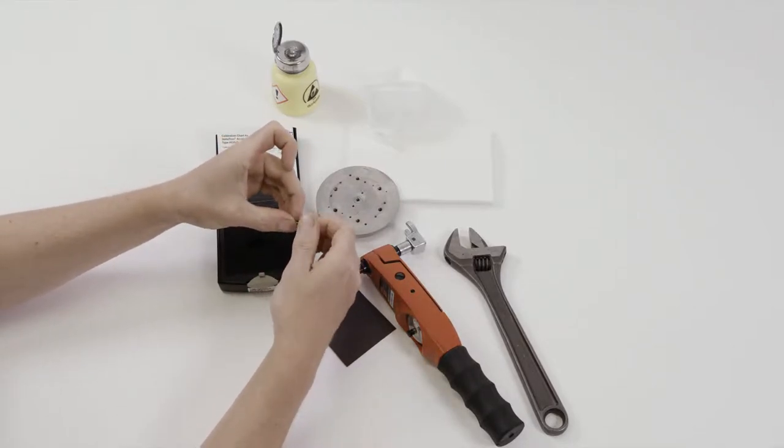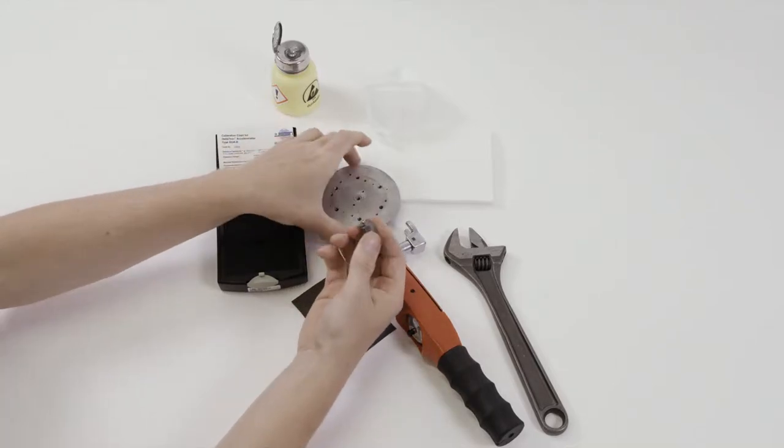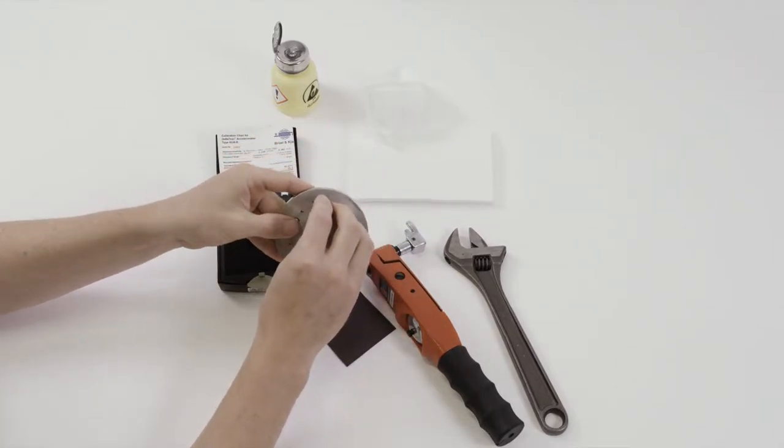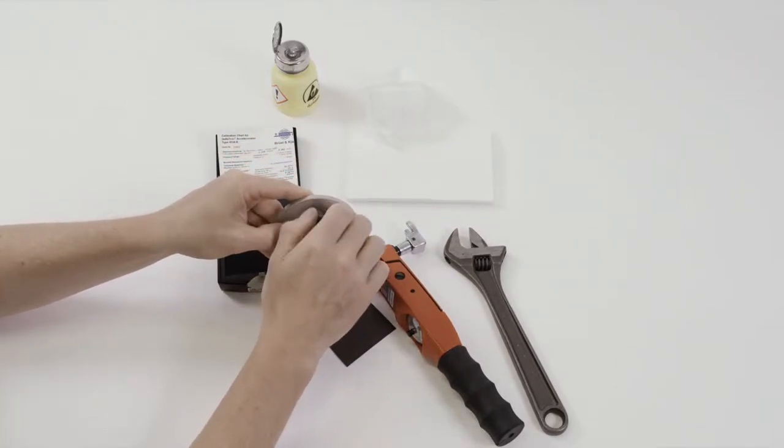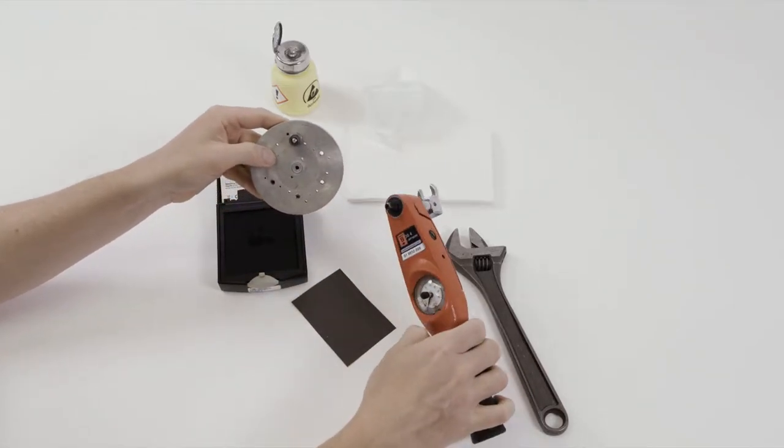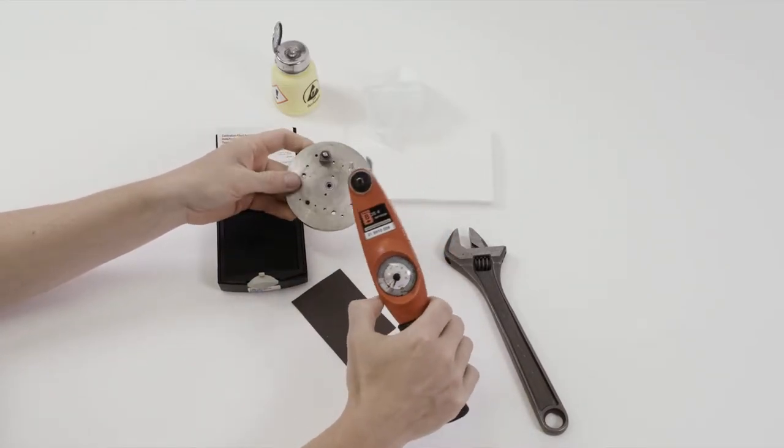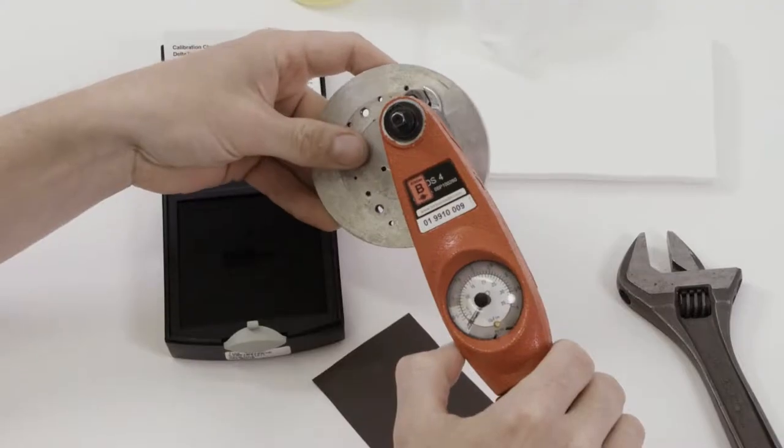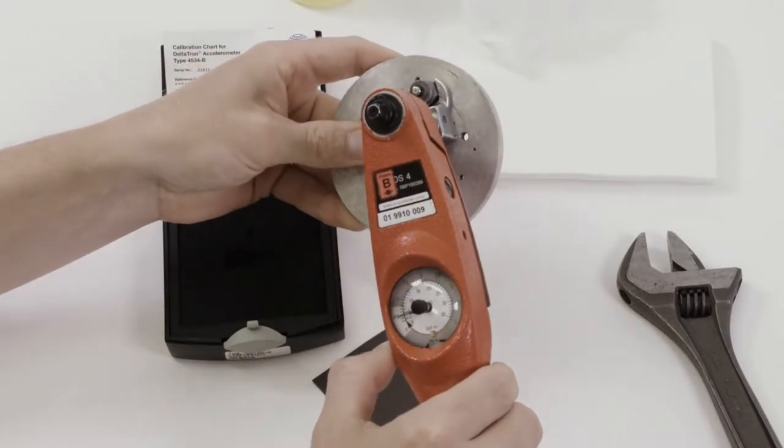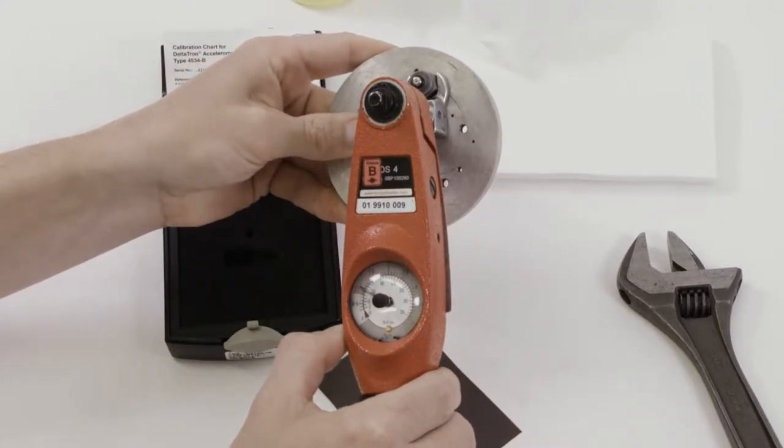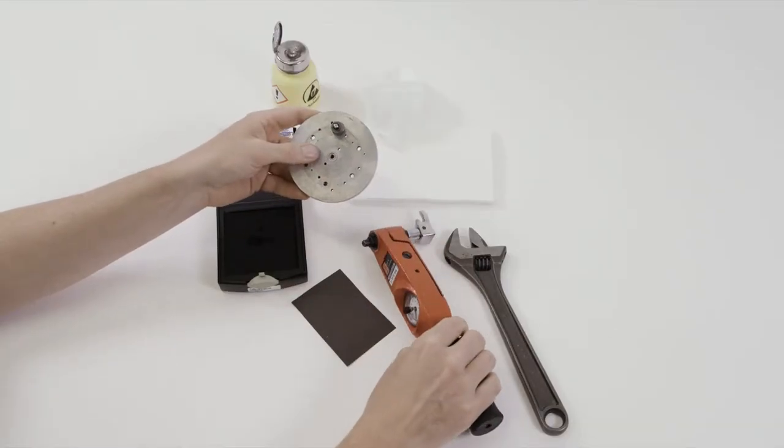Always use a torque wrench to ensure that the specified torque is not exceeded. So here, for example, to 1 Nm within the specified range.